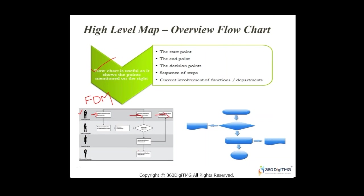A quick summary of the Define phase: we generated multiple project ideas using Voice of Customer, Voice of Business, and Cost of Poor Quality. From that, we identified primary CTQ — something we tend to improve — and secondary CTQ — something we want to keep constant or also improve. We came up with a project charter covering the background, goal, business case, team, scope, and high-level project plan. We looked at how to write SMART goals, and learned that the project charter is a living document that can be revised at any point.